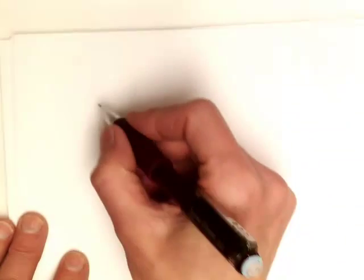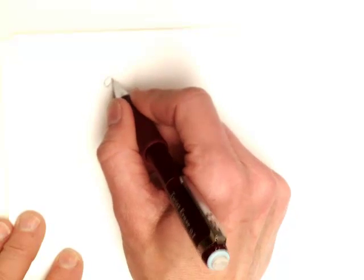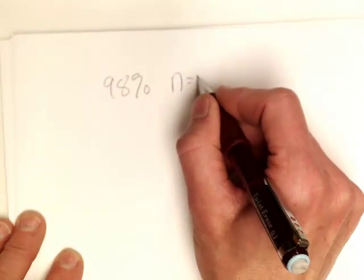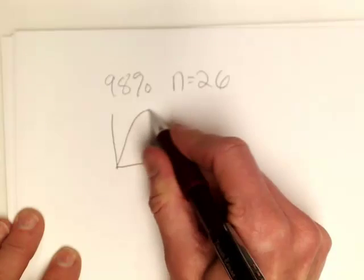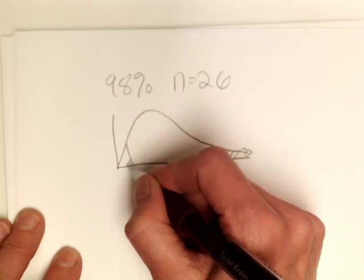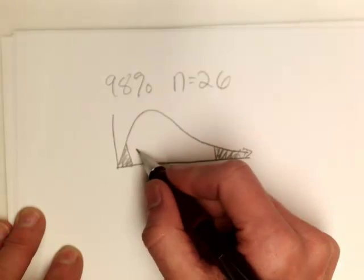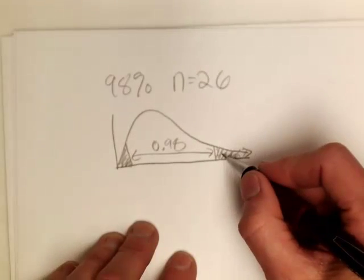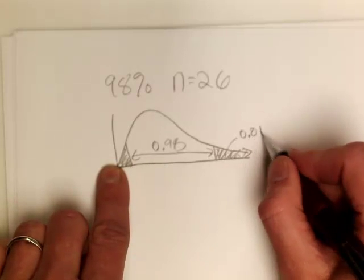Let's say we're given a level of confidence of 98% with a sample size equal to 26. I want to find the two critical values for this confidence interval. If I have .98 area in between, I'd have .02 area total, and in one tail I'd have .01.